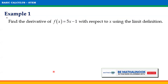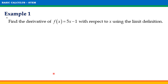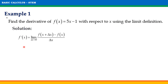Let us now take some examples to apply the definition of the derivative presented earlier. Find the derivative of f of x equals 5x minus 1 with respect to x using the limit definition. To find the derivative of the given function f of x equals 5x minus 1, remember that f prime of x is equal to the limit of f of x plus delta x minus f of x over delta x as delta x approaches 0. We simply need to substitute 5x minus 1 to f of x, and to find f of x plus delta x, we substitute x plus delta x to the variable x on the given function.